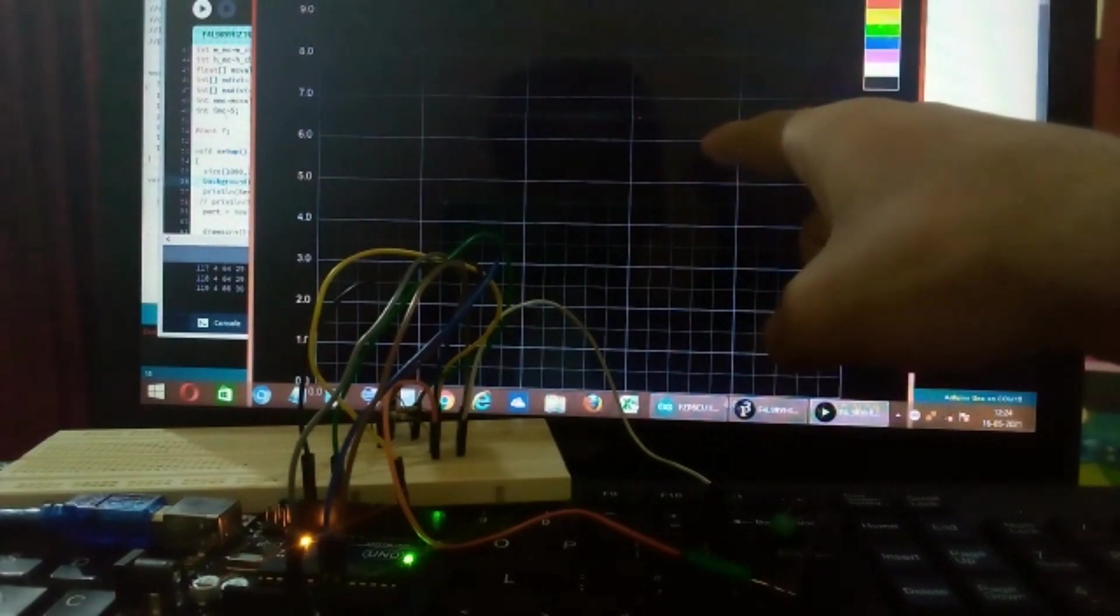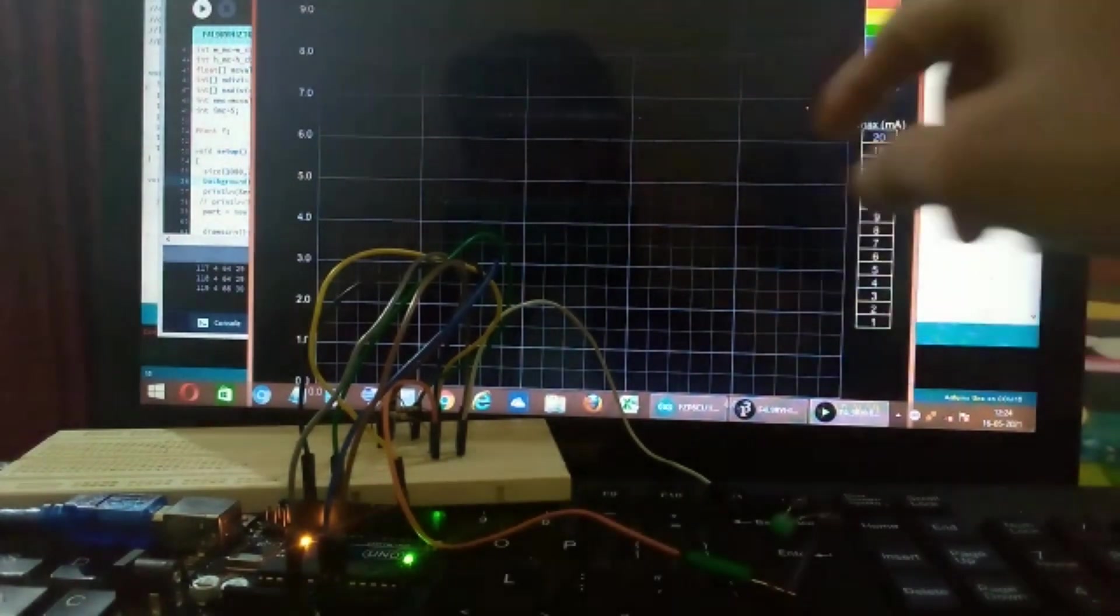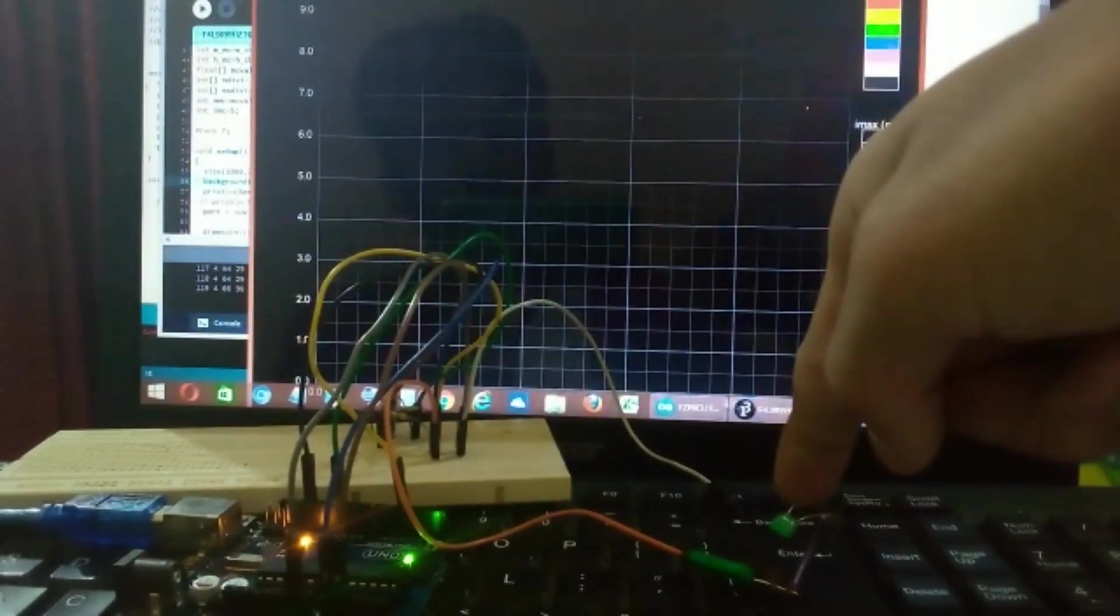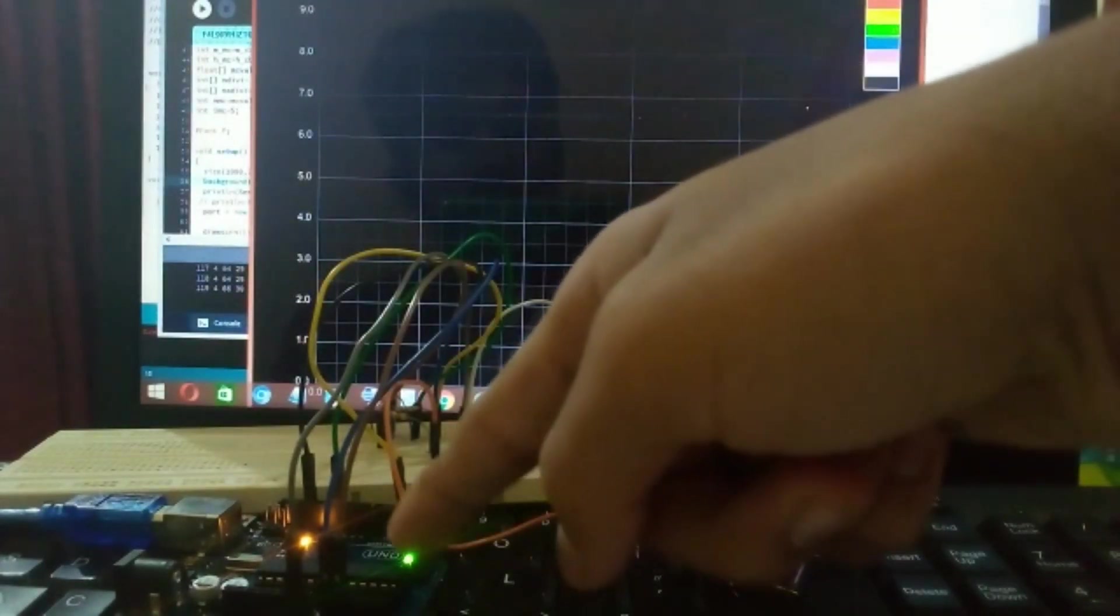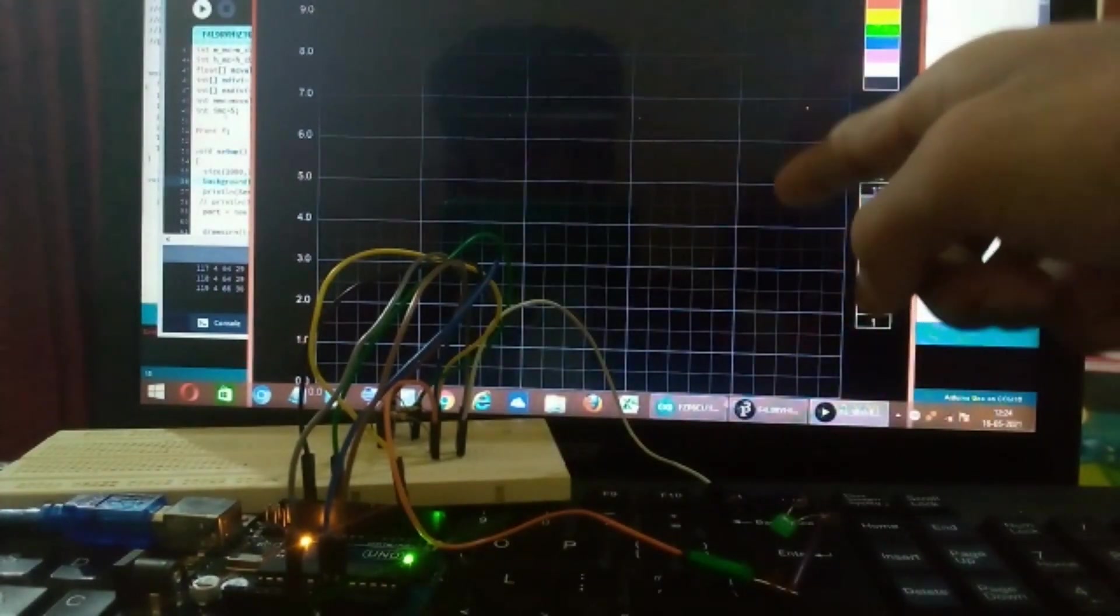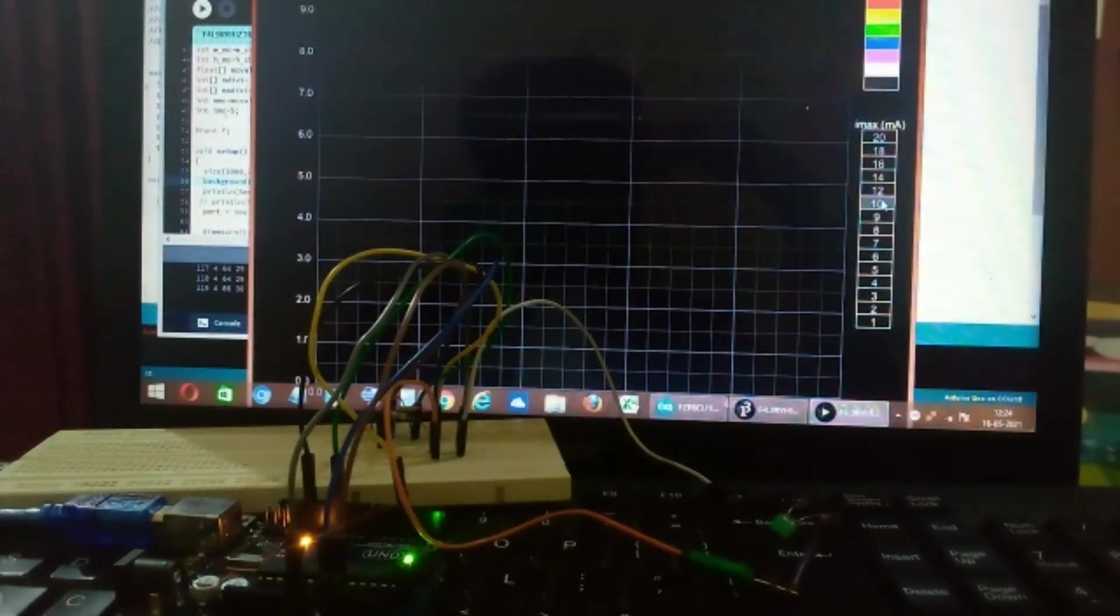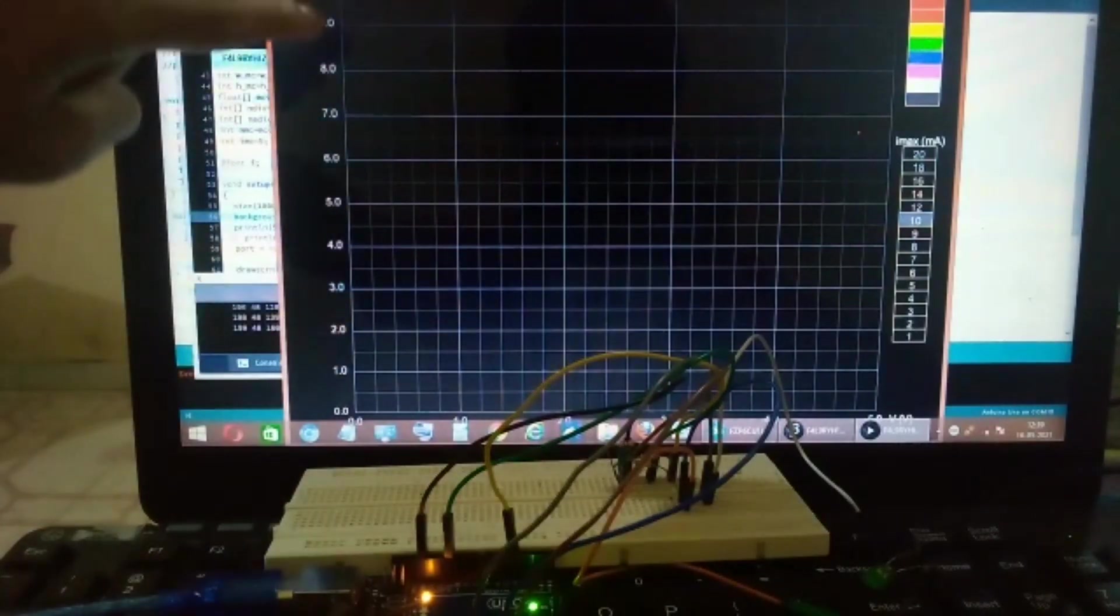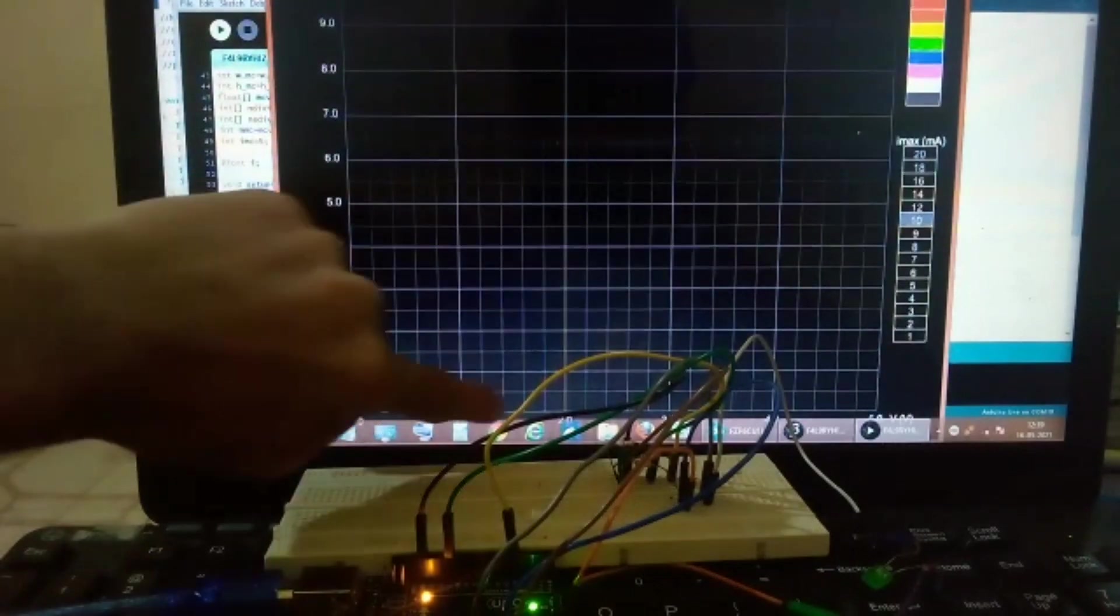Over here I have a software called Processing which is built by some super developers. When I run the program, the LED will light up after 10 seconds and the Arduino collects the data and it is transferred to the computer for plotting the curve. And what this IV characteristic means? It's just simple. It is just a relationship between the current and voltage of the component.